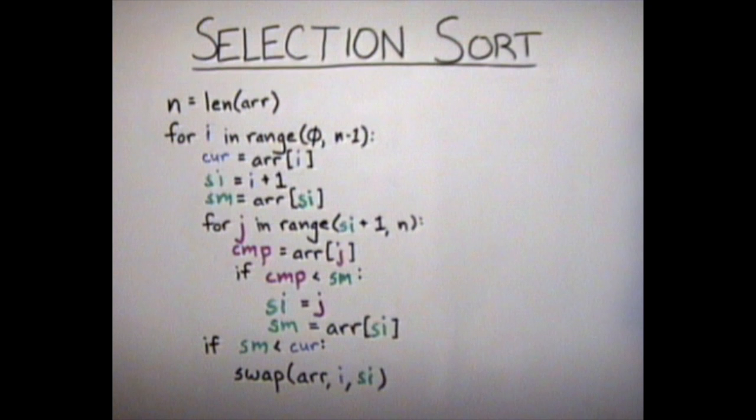Two variables, i and cur, represent what you saw with the red arrow in my example before. The variables si and sm represent the green pen, in other words, the smallest value to the right of the red arrow.